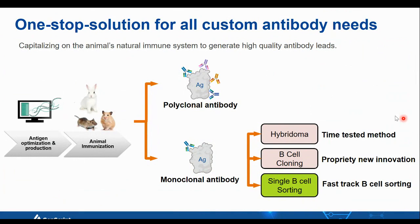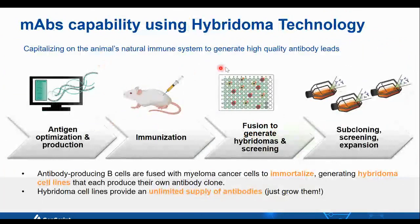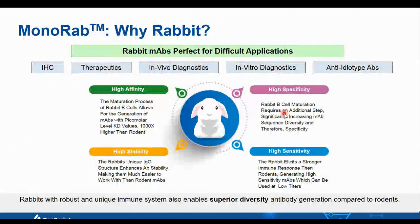GenScript uses time-tested hybridoma technology, as well as innovative technologies such as B-cell cloning and single B-cell sorting to accelerate B-cell selection and capture a large B-cell repertoire. Upon harnessing the animal's immune system to generate high-specificity and high-affinity antibodies through intrinsic affinity maturation, we use reliable hybridoma technology to immortalize antibody-producing B-cells, creating hybridoma cell lines that provide unlimited supply of high-quality monoclonal antibodies.